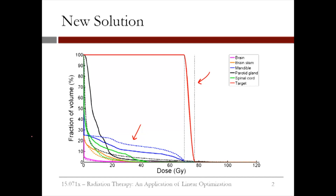However, the dose to other critical structures has increased, especially to the parotid glands, shown in black, and to the spinal cord, shown in green. This shows how you can modify the objective to capture different trade-offs that might be desirable to different decision makers or for different patients.